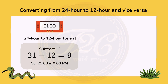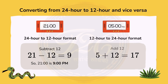Converting 24-hour to 12-hour format, we should always subtract 12 from the bigger number to get the 12-hour format. Whereas to convert from 12-hour format to 24-hour format, we should always add 12 to the smaller number to get the 24-hour format. Examples are given.